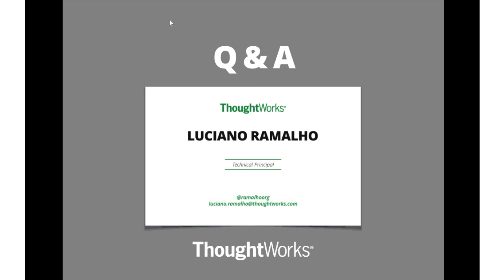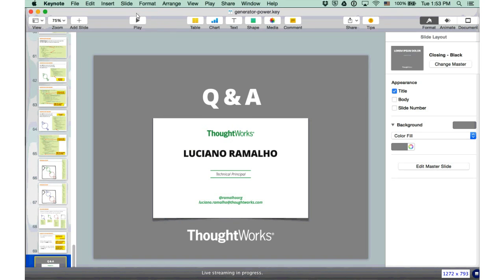Thank you, Luciano, for the brilliant presentation. Let's move on to questions and answers. We have a couple of questions about Python version compatibility — does everything you showed apply to both Python 2 and Python 3? The yield keyword was introduced in Python 2.2 in 2001, so pretty much everything shown has been working in Python for a long time. Everything I showed applies to Python 2.7 as well, with minor differences — the functionality is there, maybe with slightly different ways of invoking things.